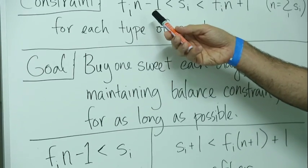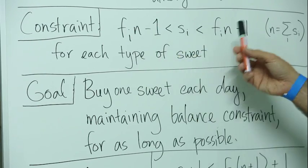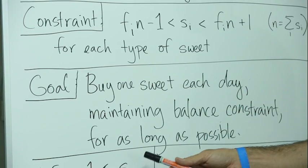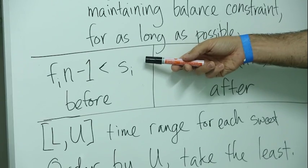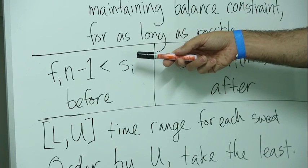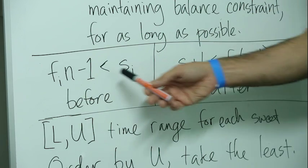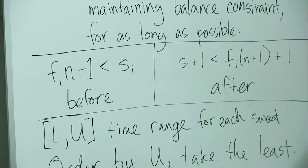If we take this constraint, we can divide it into two parts, the lower and the upper part. We know that before Danny chooses, if Danny chooses to pick sweet S_i on a given day, that before he has chosen that sweet, if he has already chosen N sweets in total, balance is already maintained, and that means that F times N minus one is less than S.